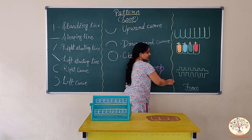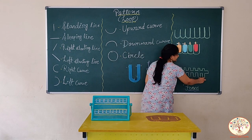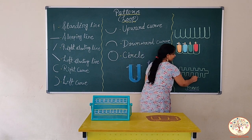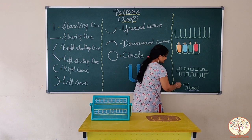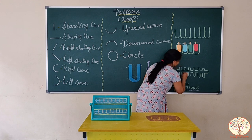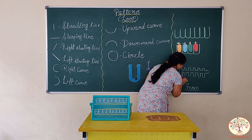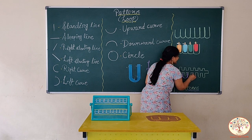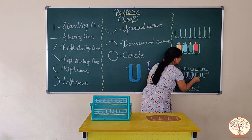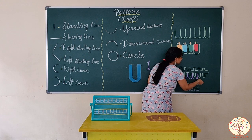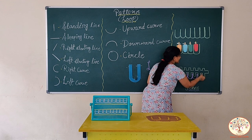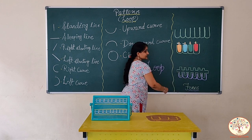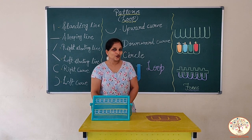Now see — what is this? This is a fence. We will trace the outlines of this fence also and make a loop pattern. Standing line, up curve, again standing line. Once again standing line, up curve and standing line. Standing line, up curve and standing line — repeated across. This is a loop pattern.